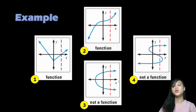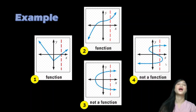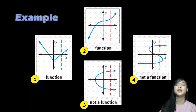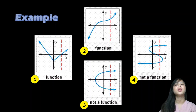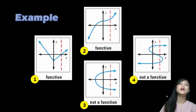The last graph is also not a function. Why? Because the vertical line touches three points — one, two, three. Since the vertical line touches three points, that means this is not a function.